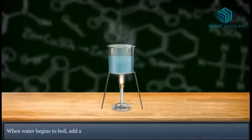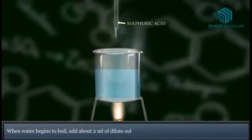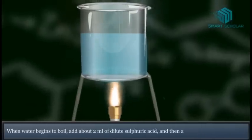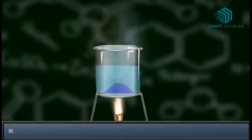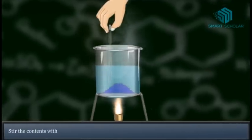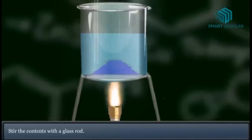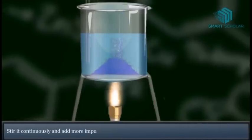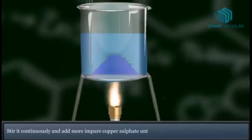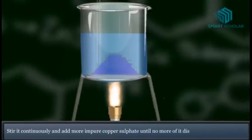add about 2 ml of dilute sulphuric acid and then a spoonful of CuSO4. Stir the contents with a glass rod. Stir it continuously and add more impure copper sulfate until no more of it dissolves.